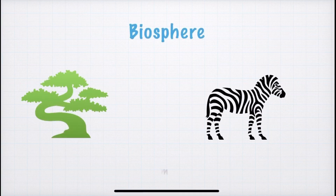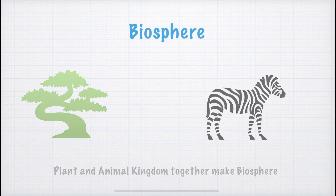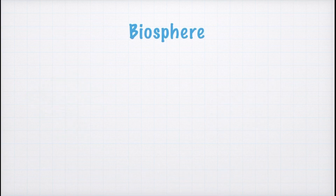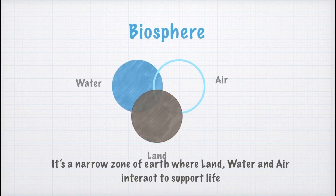So we have already studied the domain of land — lithosphere; water — hydrosphere; and air — atmosphere. Now we will study about biosphere. Plant and animal kingdom together make biosphere. Since humans, plants, and animals need water, air, and land for our survival, biosphere is nothing but a zone where land, water, and air interact to support life.